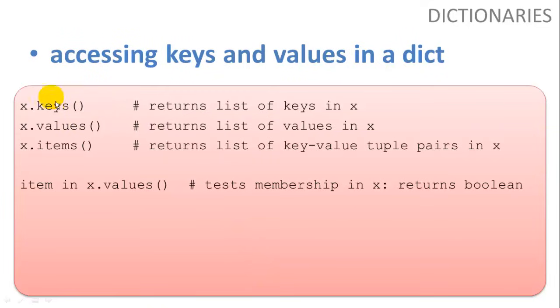So how do we access the keys and values in the dictionary? We can say x.keys, it will return a list of the keys in x. x.values returns a list of values in x. And x.items returns a list of key value tuple pairs in x. So if we want to check membership in values of x, we can say item in x.values. And this will test the membership in x and return a boolean.